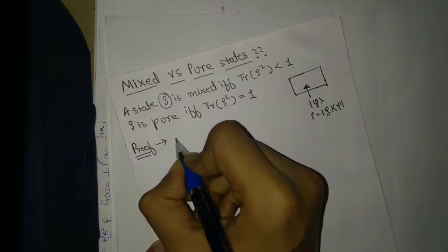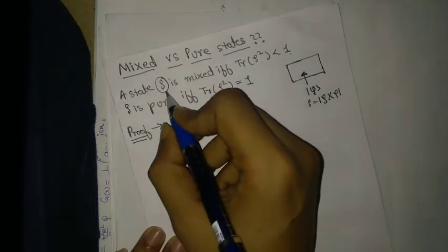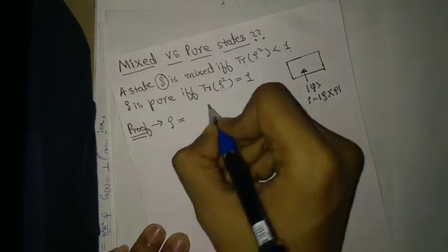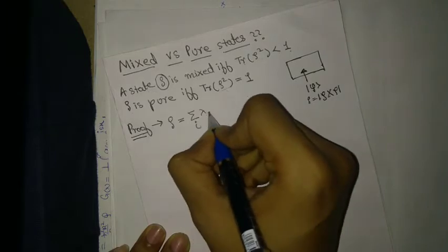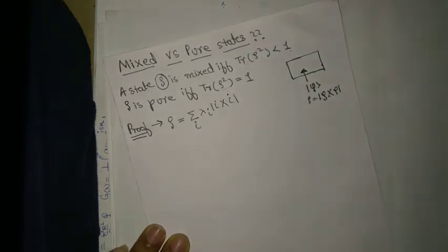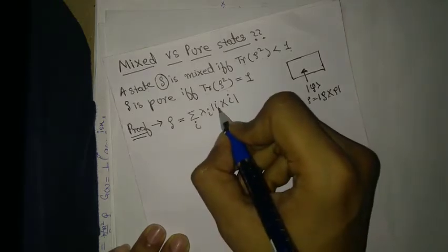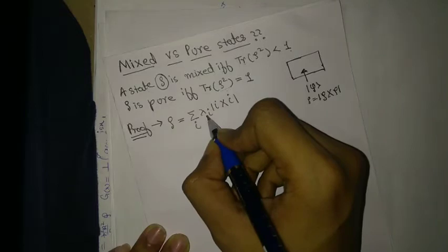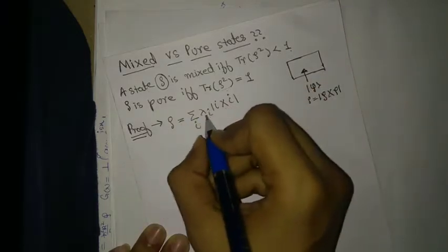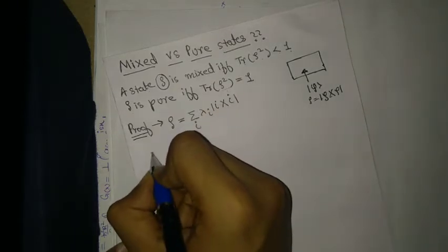A state ρ is given to us. By the definition of ρ, it has a spectral decomposition where each |i⟩ forms an orthonormal basis and the λᵢ are non-negative real eigenvalues. This decomposition holds for any density operator ρ. Now let's compute ρ².